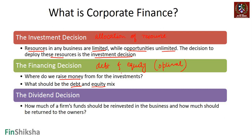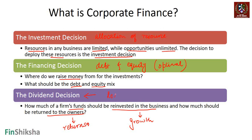Finally, once the firm has taken the investment decision and decided on a certain debt and equity mix, there is a decision on how much of the firm's funds will be reinvested in the business. Reinvestment happens if the firm perceives a lot of growth; if there is less growth, you return the money to the owners or shareholders. This is the dividend decision — how much of the firm's profitability is distributed as dividends, versus how much is reinvested in the business.